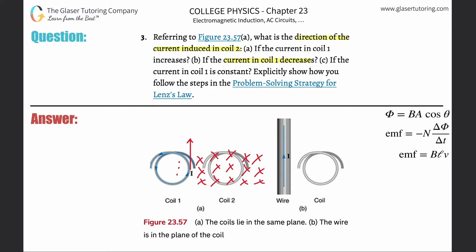The magnetic field into the page is being reduced in strength. By Lenz's law, the induced current opposes the change — so to counteract the decrease, we need to put more magnetic field vectors into the page. The question becomes: what direction of current produces a magnetic field going into the page inside the loop? A counterclockwise current gives a field out of the page, so we need the opposite.